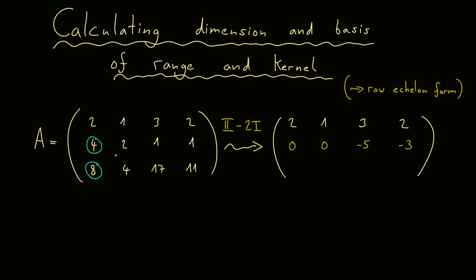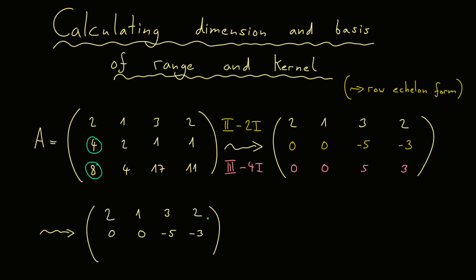We also want to do the same thing in the third row. Here we have to subtract 4 times the first row, giving us a zero, and then subtracting 4 gives us also zero. Then we get plus 5, and then plus 3. We are almost finished — just one more step to reach the row echelon form. I copy the first two rows, and to generate a zero in the remaining entry, I take the new third row and add the new second row. Adding minus 5 and 5 gives zero, and also a zero in the last column. Now we reach the row echelon form.